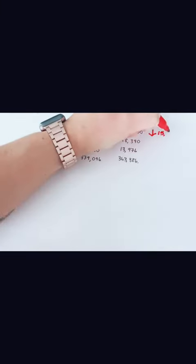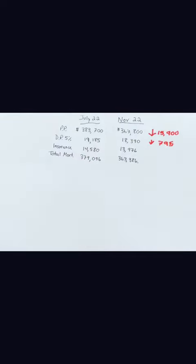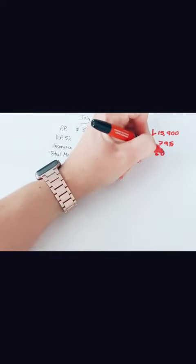In November, the purchase price is less by $15,900, your down payment is less by $795, and mortgage insurance by $604.